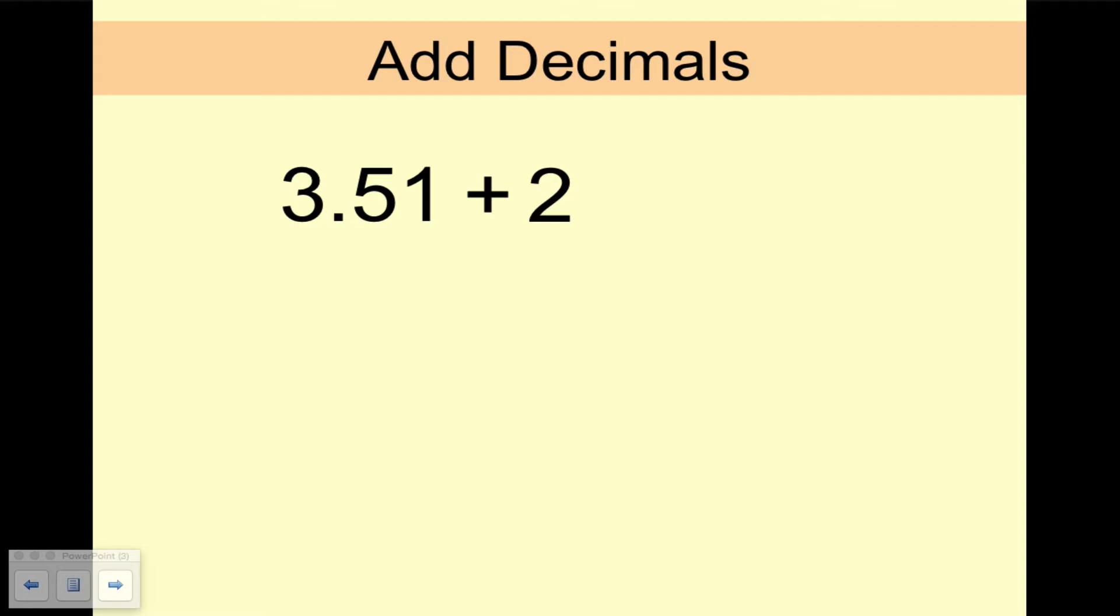So here's our first example. Try it on your own and then check back and see the answer. Okay, to add 3.51 and 2, first thing we need to do is line up the decimal points. And so we're going to make 2 into 2.00. It looks like two dollars there. And we'll line those up. So the answer is 5.51.